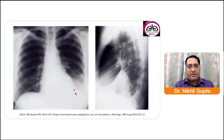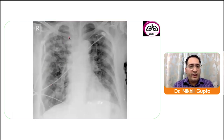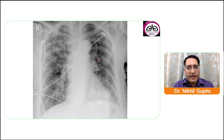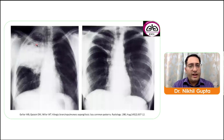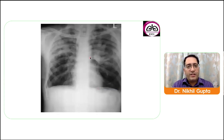The mucoid impaction simulated adenopathy and resolved with steroid therapy. Another X-ray shows central bronchiectasis with ring shadows in perihilar regions and multiple nodular opacities bilaterally. A further X-ray of a patient shows right upper lobe consolidation with areas of cavitation, which cleared on steroids. Another case shows segmental atelectasis of the right upper lobe, and a classic chest X-ray shows typical V/Y shadows in finger-in-glove appearance with opacified bronchi due to mucoid impaction.